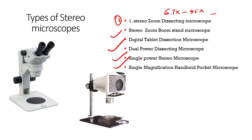The stereo zoom boom stand microscope comes with a larger stage and base, optional dual pipe lighting, and a magnification of 6x to 45x. The digital tablet dissecting microscope is a high-end model that contains a touchscreen LCD tablet and camera, with a magnification of 6.7x to 45x.